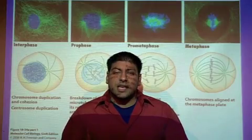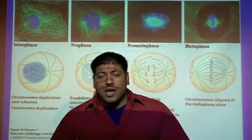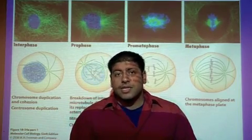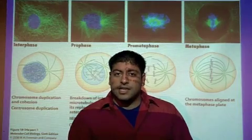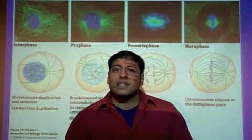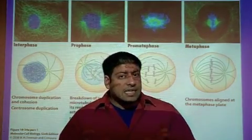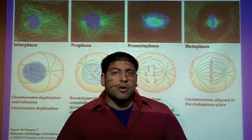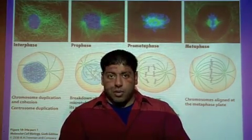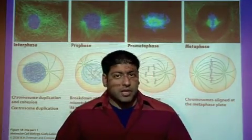In mitosis, we are going to see how the cytoskeletal filaments play a role. We're going to be looking at the microtubules and the motor proteins associated with microtubules — kinesin, the plus-end-directed motor protein, and dynein, the minus-end-directed motor protein — and how these work together to help pull the chromosomes apart during mitosis.